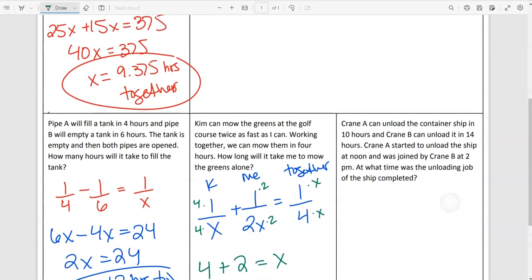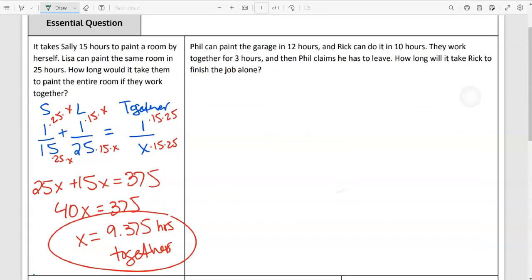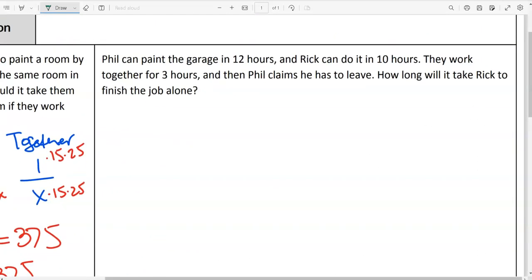So these two, they're about the same. Let's do this one up here. We got Phil and we have Rick. Phil can paint the garage in 12 hours. Rick can do it in 10 hours. They work together for three hours, and then Phil claims he has to leave. So Rick has to do the rest by himself. How long is it going to take Rick to finish this job alone? So let's figure it out. Let's talk it out.